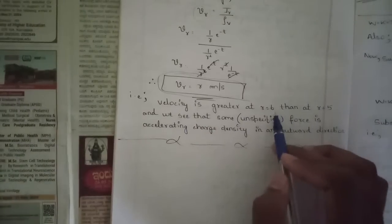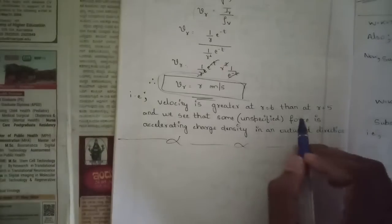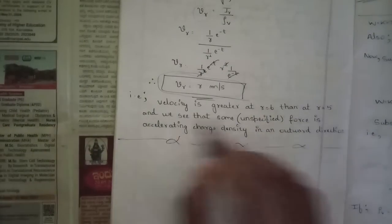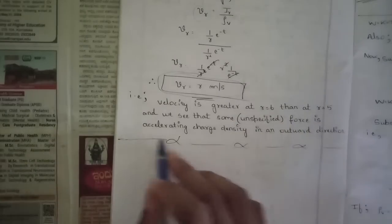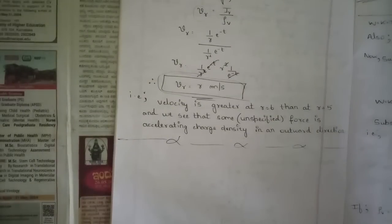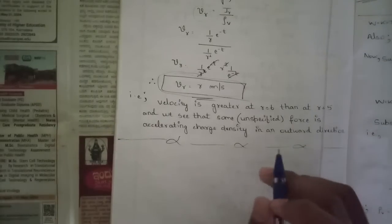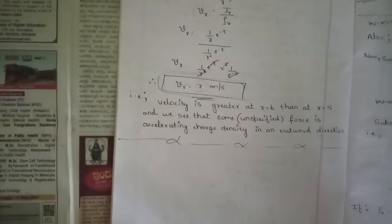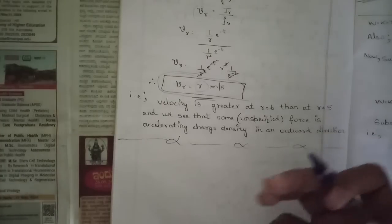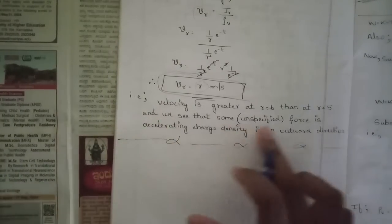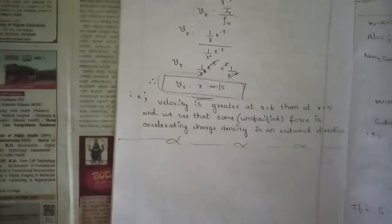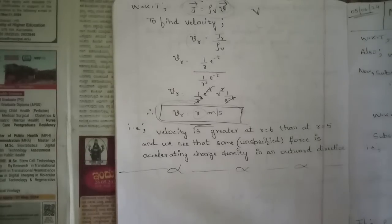The velocity is V_r = r meters per second. So velocity is greater at r = 6 than at r = 5. We can see that an unspecified force is accelerating the charge density in an outward direction. This confirms that as radius increases, both current and velocity increase. This was all about this problem — please refer to our previous videos, like, share, and subscribe. Thank you.